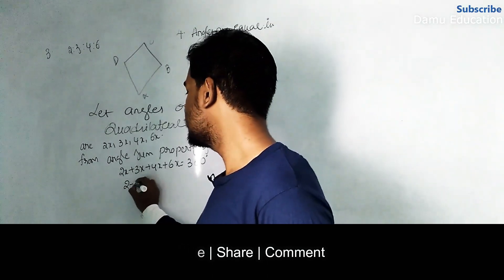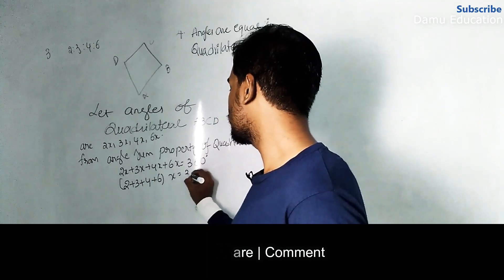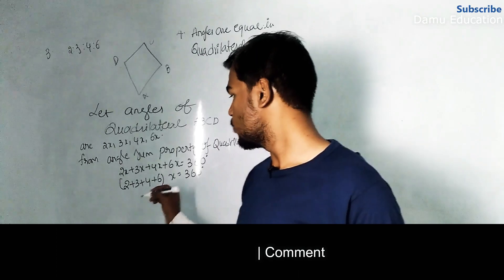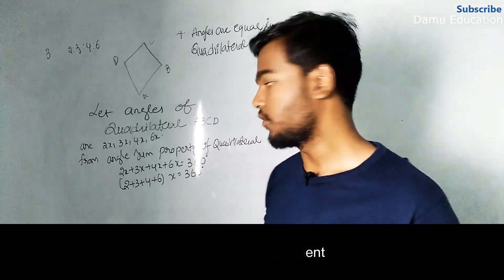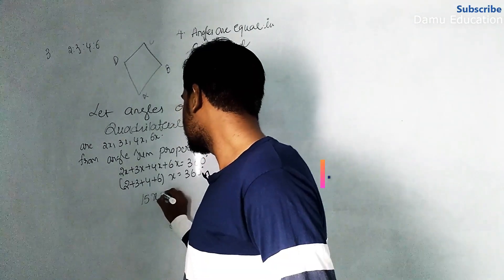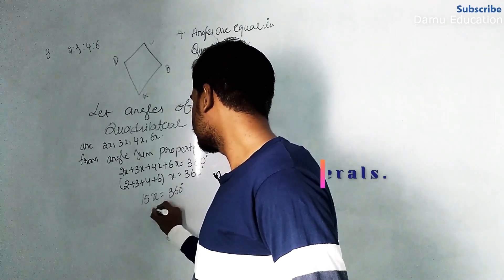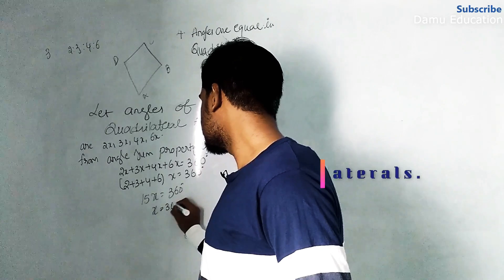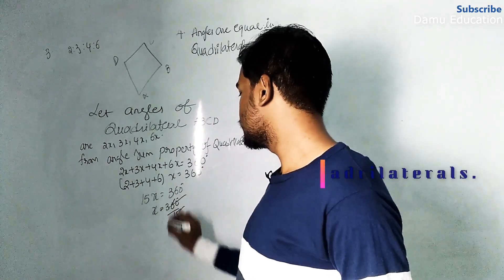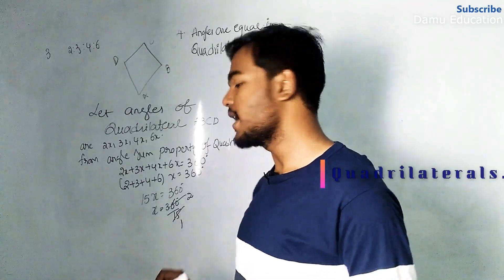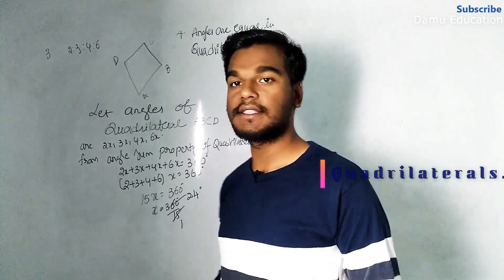So 2x + 3x + 4x + 6x = 360 degrees. Taking x common: (2 + 3 + 4 + 6) × x = 360 degrees. That gives us 15x = 360 degrees, so x = 360 ÷ 15 = 24 degrees.